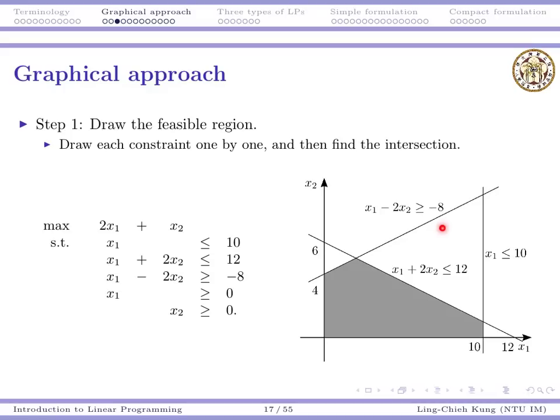Eventually, you get five parts and you find the intersection of them. That's the feasible region, the shaded area here.